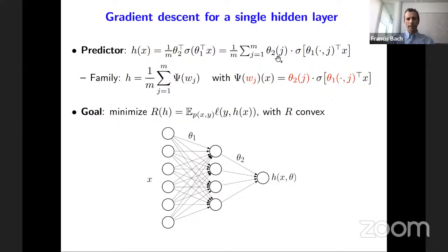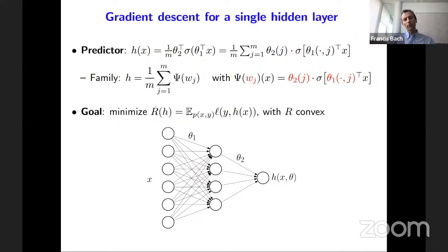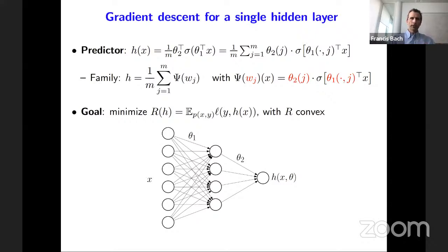If I call w_j the concatenation of theta_2(j) and theta_1(j), then h is an average of functions with no parameter sharing. This is true for one hidden layer, but with more layers the output neurons before the final layer do share parameters — which is in fact one reason people prefer deeper networks. However, for our analysis, we need the one hidden layer structure, though we remain open to extending results to deeper networks.